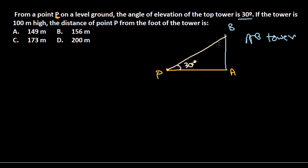It is also telling the tower is 100 meters high, so AB equals 100 meters for sure. This angle is provided, and what they are asking is the distance of point P from the foot of the tower, which is A. So this distance we don't know, so we need to find the distance PA.